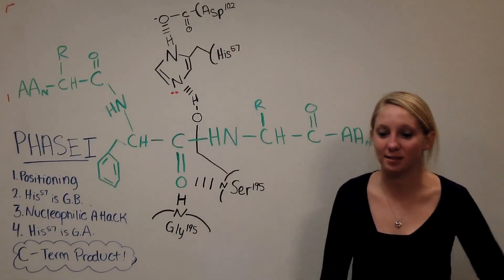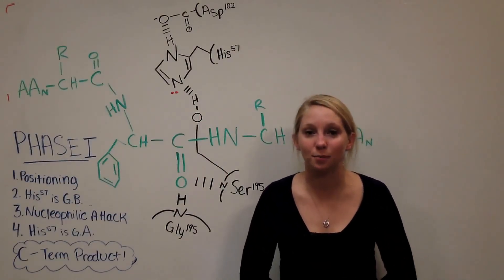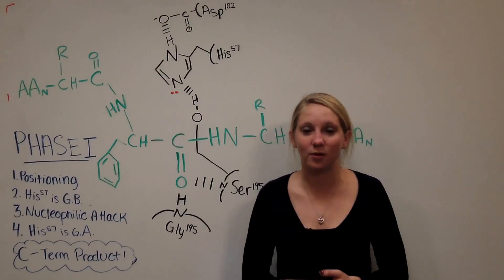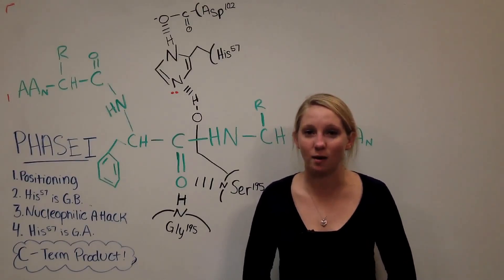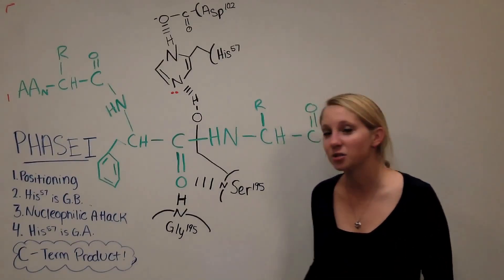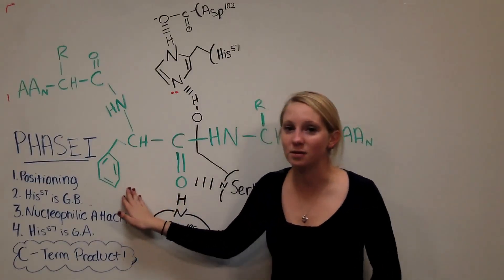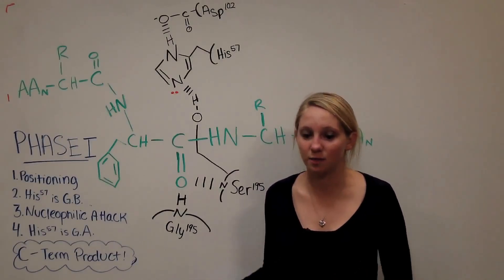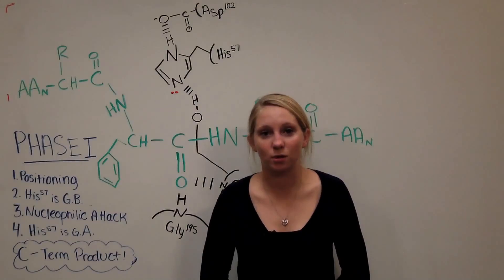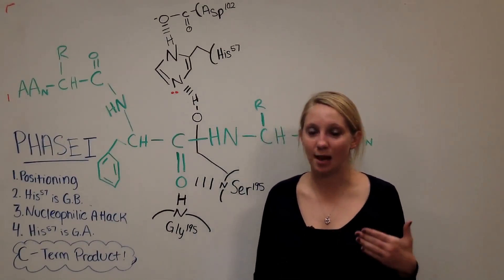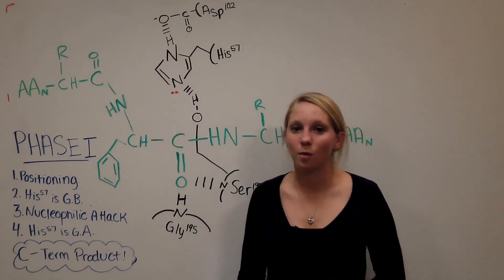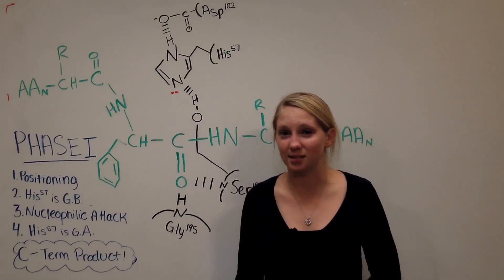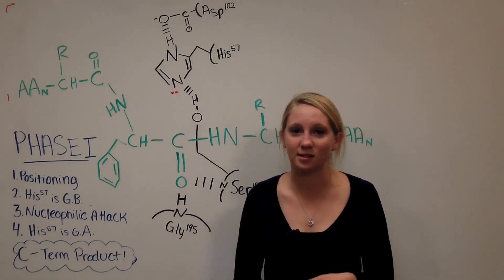Now we're going to get into the mechanism. Chymotrypsin is a protease that's going to be cleaving peptide bonds, but it's a specific protease — it's specific for cleaving at the C-terminal end of an aromatic polypeptide bond. In the example here, I have phenylalanine as the aromatic group, but keep in mind it can cleave at the C-terminal of any aromatic group. As we go through this mechanism, focus on the general concepts: what is acting as a general acid, general base, nucleophile, and electrophile.